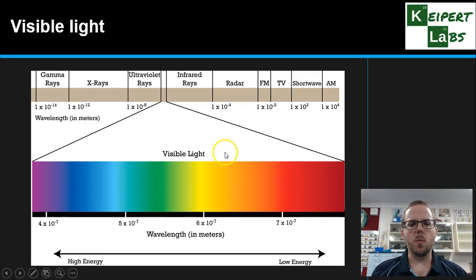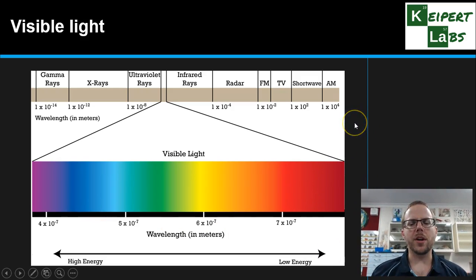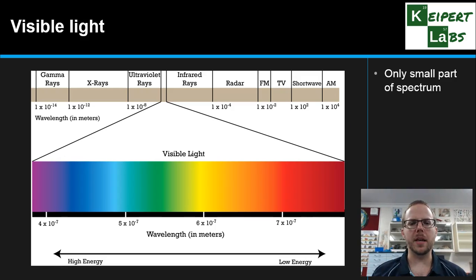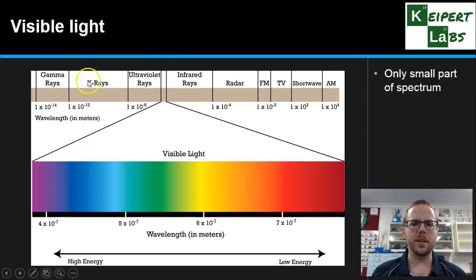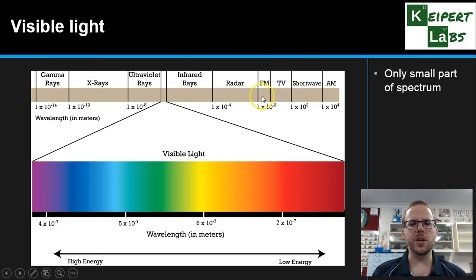What we call visible light — our ROY-GBIV, the colors that we can observe — is actually just one small part of the overall electromagnetic spectrum. All the colors we can see make up this tiny little band somewhere roughly in the middle of the electromagnetic spectrum, with gamma rays and other high energy types on one end, and lower energy radio waves on the other end.